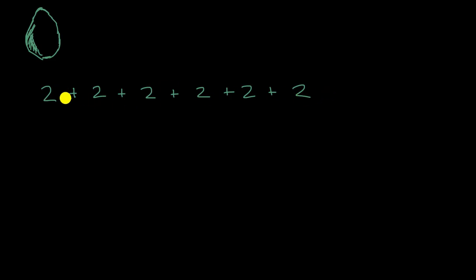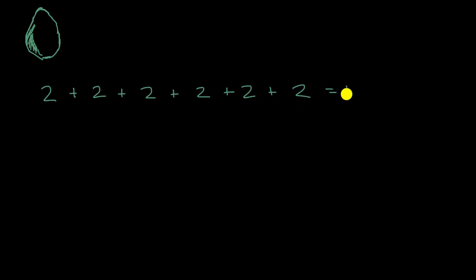Two plus two is four. Add another two, you get to six. Add another two, you get to eight. Add another two, you get to ten. Add another two, you get to twelve. And that all is fine.